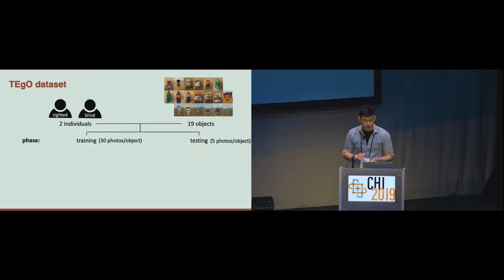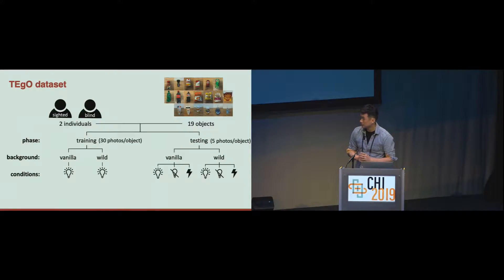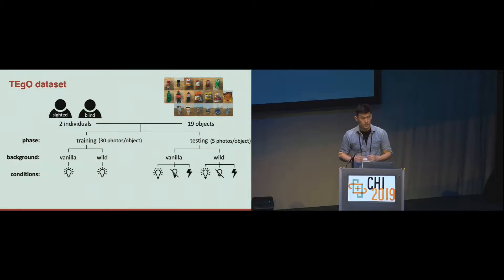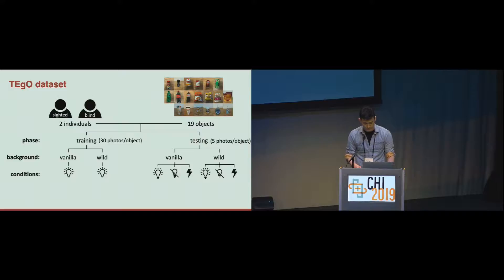In the testing phase, we collected five photos per object. For each phase, we have two different backgrounds. Especially in the testing phase, we have three different lighting conditions: first, indoor light is on; second, indoor light is off; and third, indoor light is off but the smartphone flashlight is on.